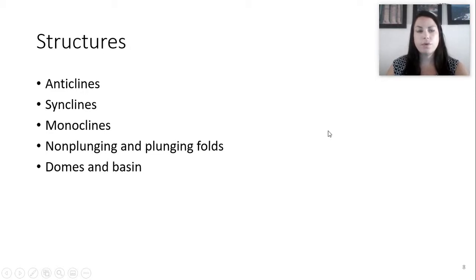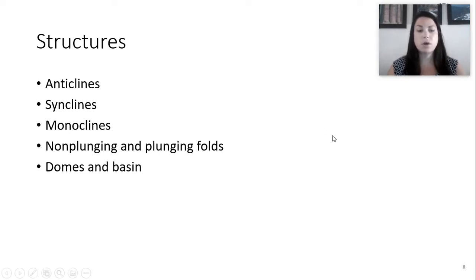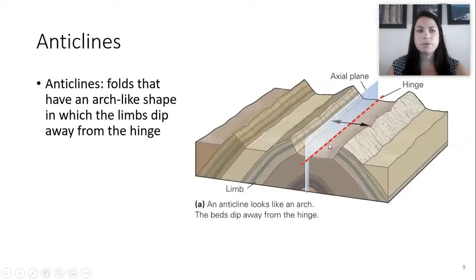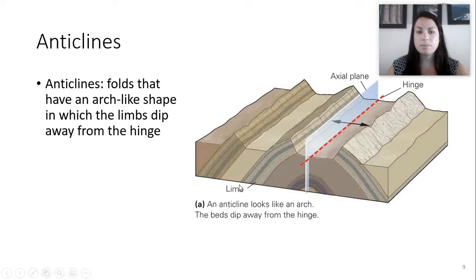Let's go over a few structures we see in the subsurface: anticlines, synclines, monoclines, non-plunging and plunging, and domes and basins. First is an anticline, which is a fold that has an arch-like shape in which the limbs dip away from the hinge.